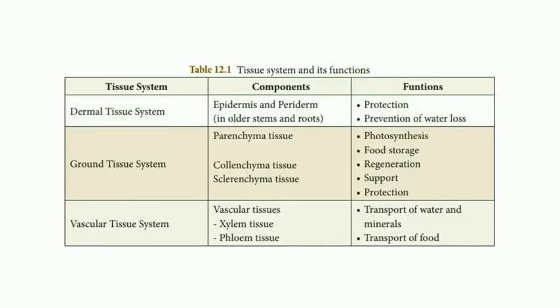Now I am going to explain the table 12.1 of your textbook — tissue system and its function. The table is divided into three columns: tissue system, its component, and its function. In the dermal tissue system, the components are epidermis and periderm, found in older stems and roots, and its function is protection and prevention of water loss. The ground tissue system has parenchyma, collenchyma, and sclerenchyma tissues, with functions including photosynthesis, food storage, regeneration, support, and protection. The vascular tissue system has xylem tissue, which transports water and minerals, and phloem tissue, which transports food.